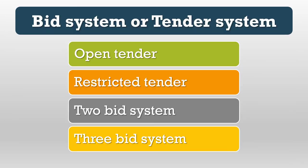Another method is the bid system or tender system. There are various types of tenders: open tender, restricted tender, limited tender, single tender, and global tender. The bid system is of three types: single bid system, two bid system, and three bid system, each having its own advantages and suitable for different levels of purchases. An open tender is open to all manufacturers, vendors, and distributors.